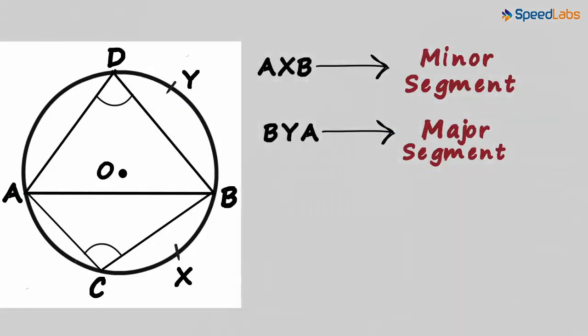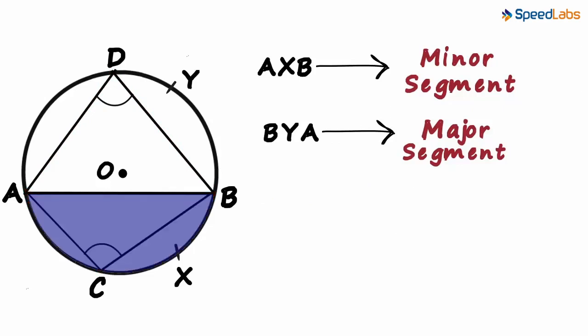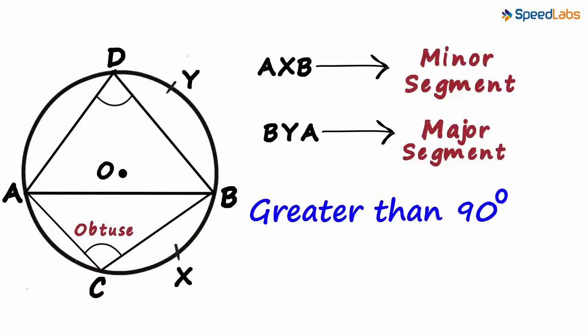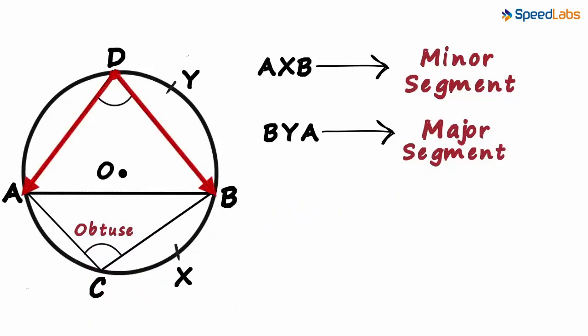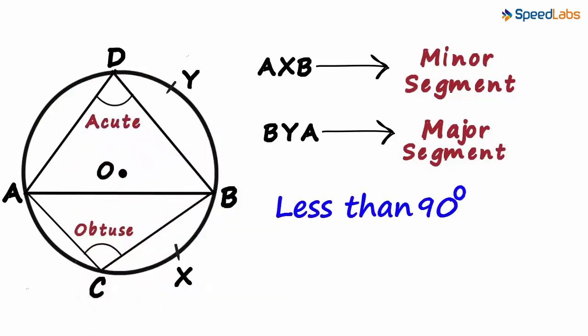Look at the figure and think for a moment. Which angle among these two do you think is greater? This one looks greater to some extent? Okay, here's an interesting fact. The angle formed in the minor segment will always be obtuse or greater than 90 degrees. And the angle formed in the major segment will always be acute or less than 90 degrees.